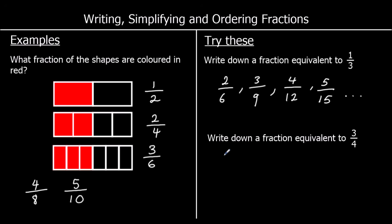For three quarters, if we multiply top and bottom by two we could get six eighths. If we multiply top and bottom by three we'd get nine twelfths. And again, we could keep on going, listing these forever.